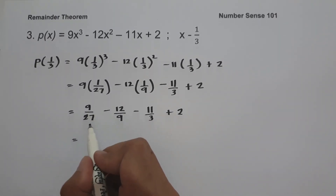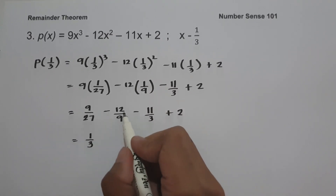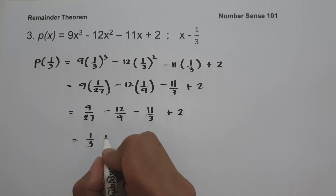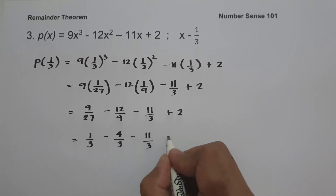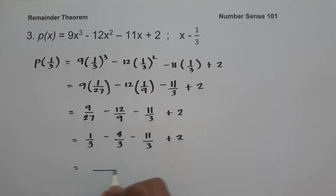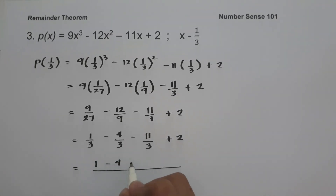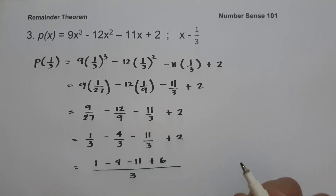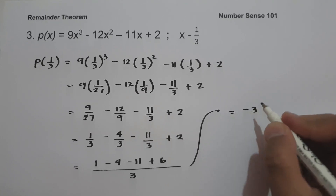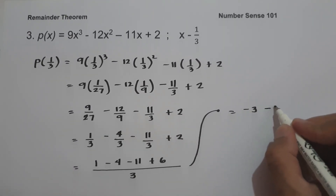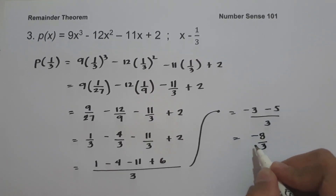Since 9 and 27 are divisible by 9, we can rewrite 9 over 27 as 1 over 3. And negative 12 over 9 is divisible by 3, so we rewrite it as negative 4 over 3. Using 3 as the common denominator: we have 1 minus 4 minus 11, with 3 times 2 giving us 6 in the numerator for the last term. Simplifying: 1 minus 4 is negative 3, and negative 11 plus 6 is negative 5, giving us negative 3 minus 5, that is negative 8 over 3. This will be our remainder.